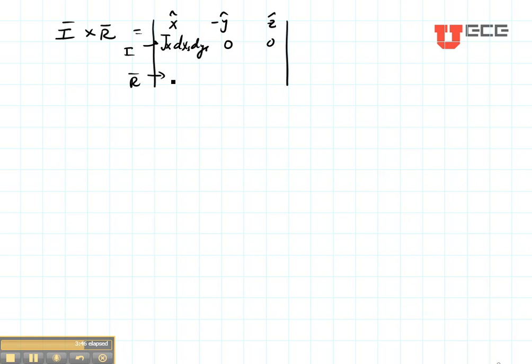R is minus XS in the X direction. It's YP minus YS in the Y direction. And it's 0 in the Z direction.